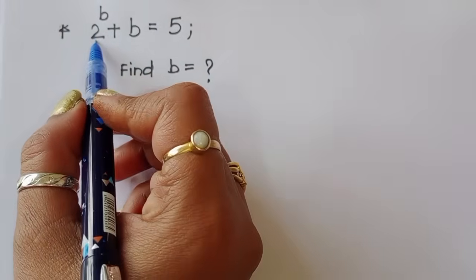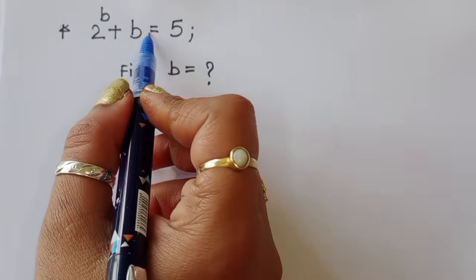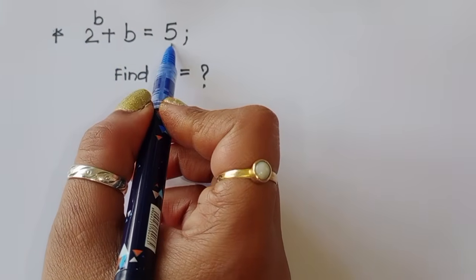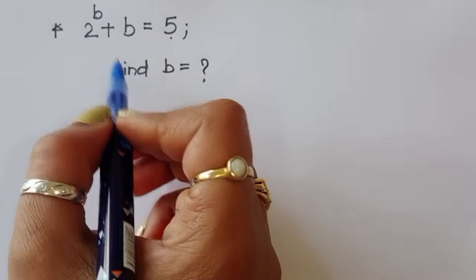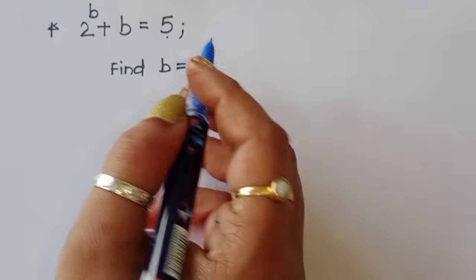The question is: given 2 power b plus b is equal to 5, we have to find out the value of b.